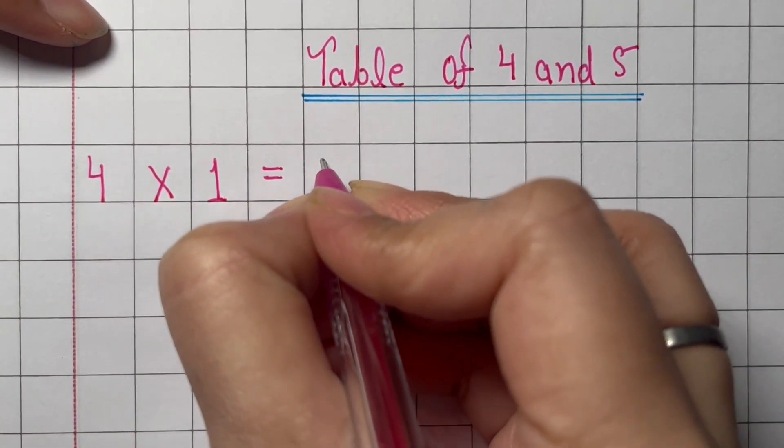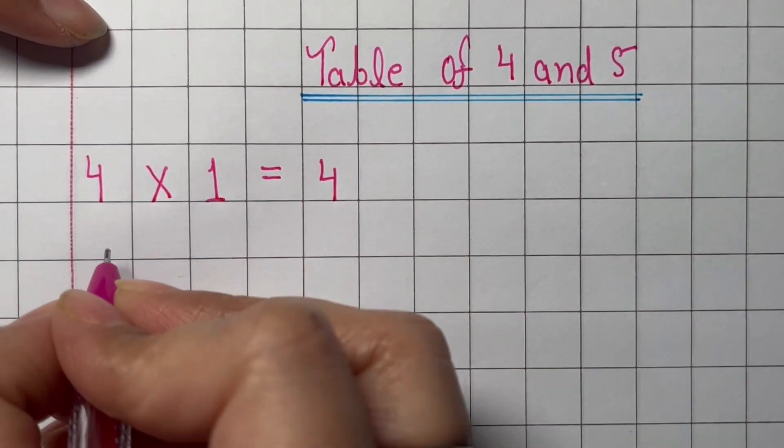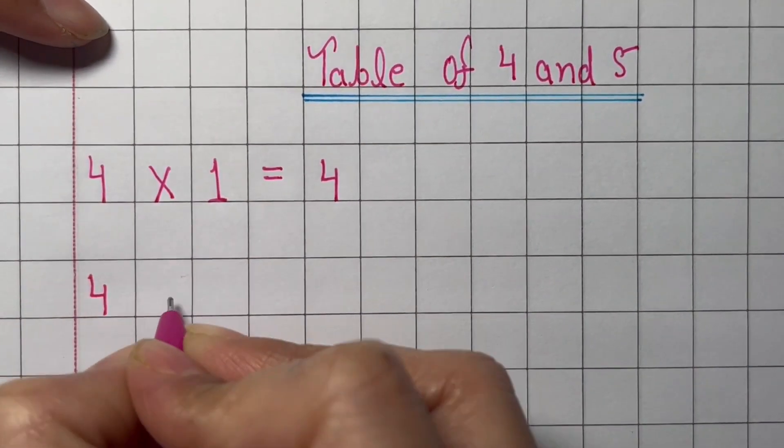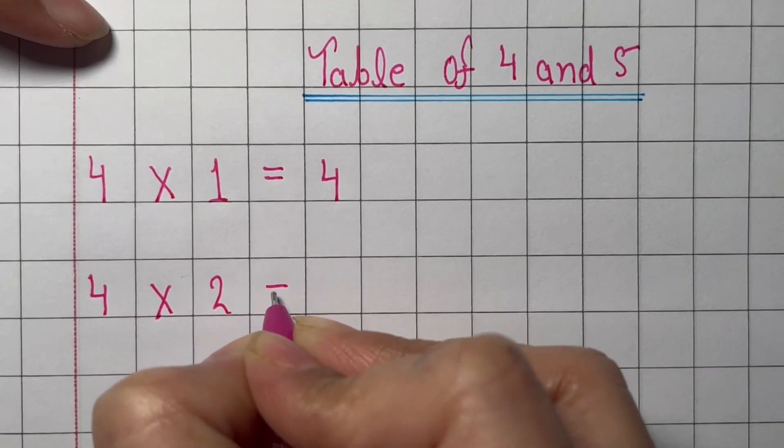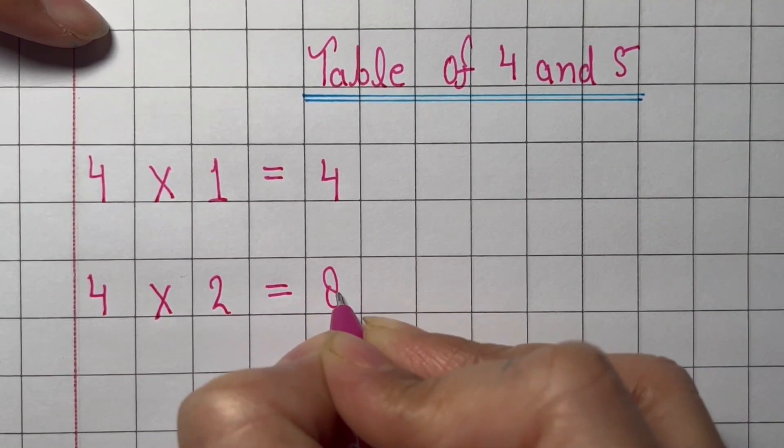One times 4 equals 4. Two times 4 equals 8.